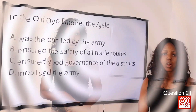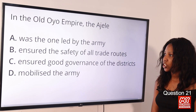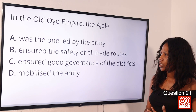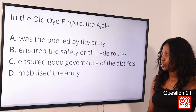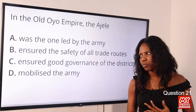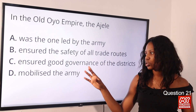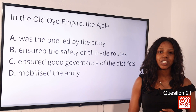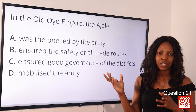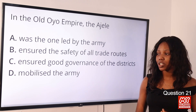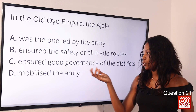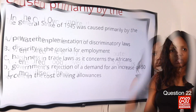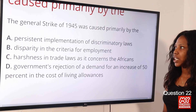Question 21: In the old Oyo Empire, the Ajele was the one who — option A: led the army; option B: ensured the safety of all trade routes; option C: ensured the good governance of the district; option D: mobilized the army. The answer is option C — the Ajele ensured the good governance of the district.